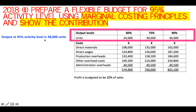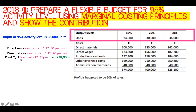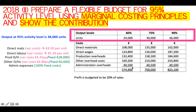Output at 95% activity level is 38,000 units. Direct materials: variable cost 4 euro 50 per unit. Direct labour: 5.20 per unit. Production overheads: variable cost 4.35 per unit, and fixed 28,000 euro. Other overheads: variable cost 6 euro 80 per unit, fixed costs 6,000 euro. Admin expense is 100% fixed cost, so 40,500 across the board — it doesn't change.